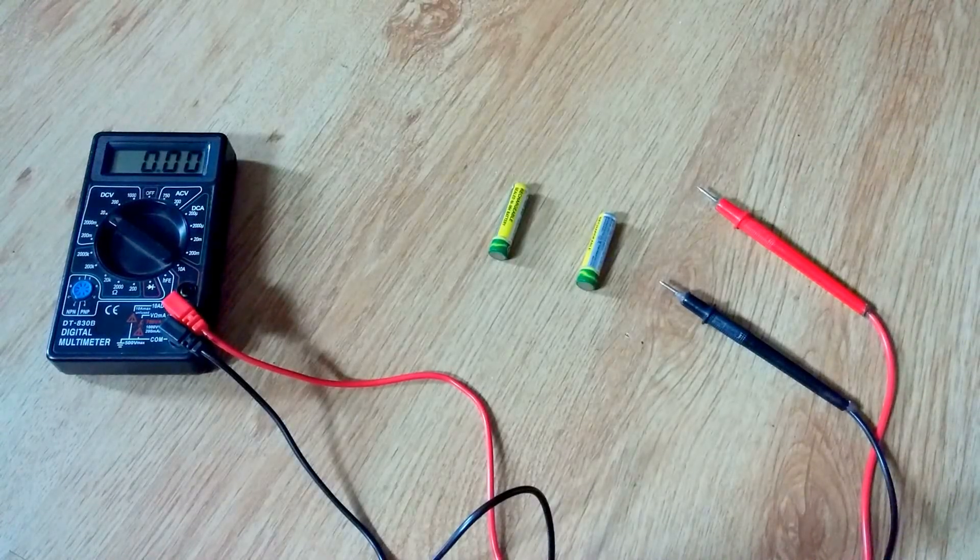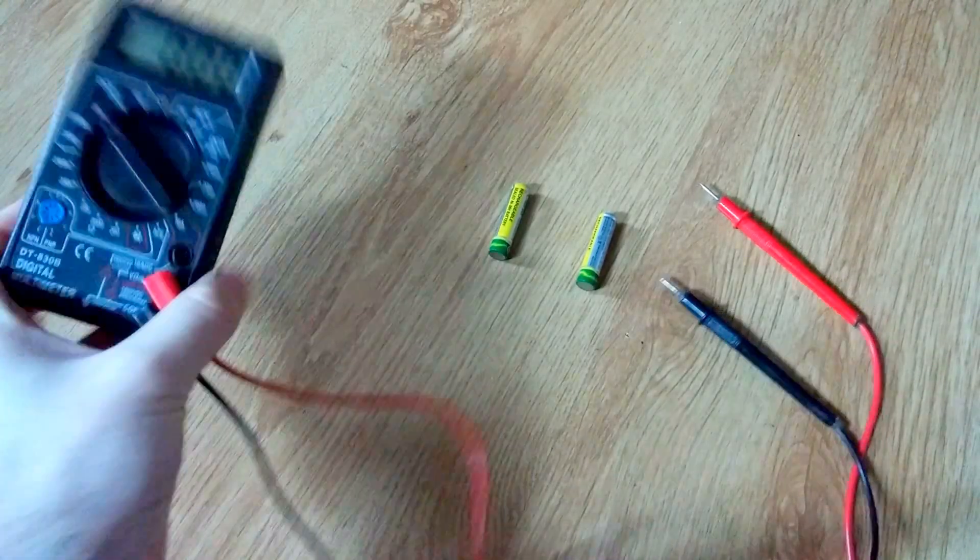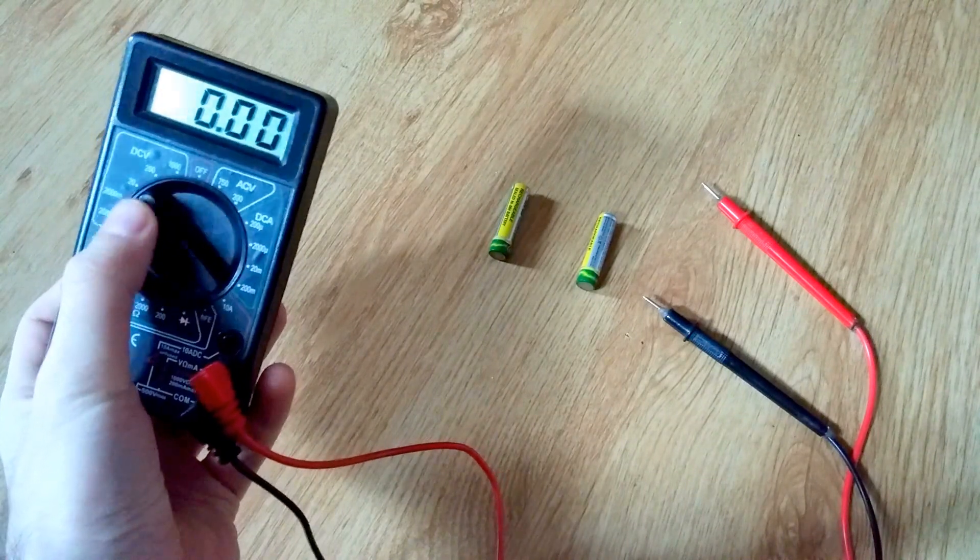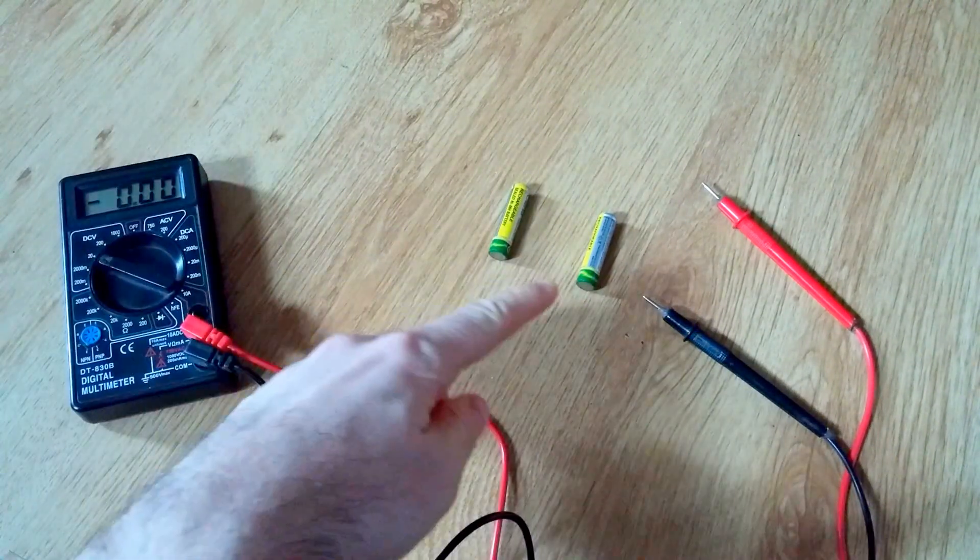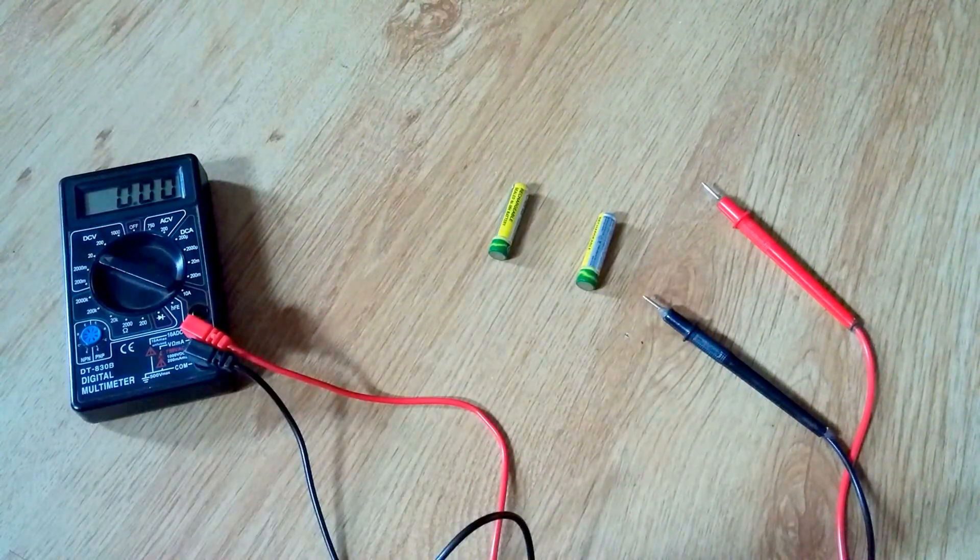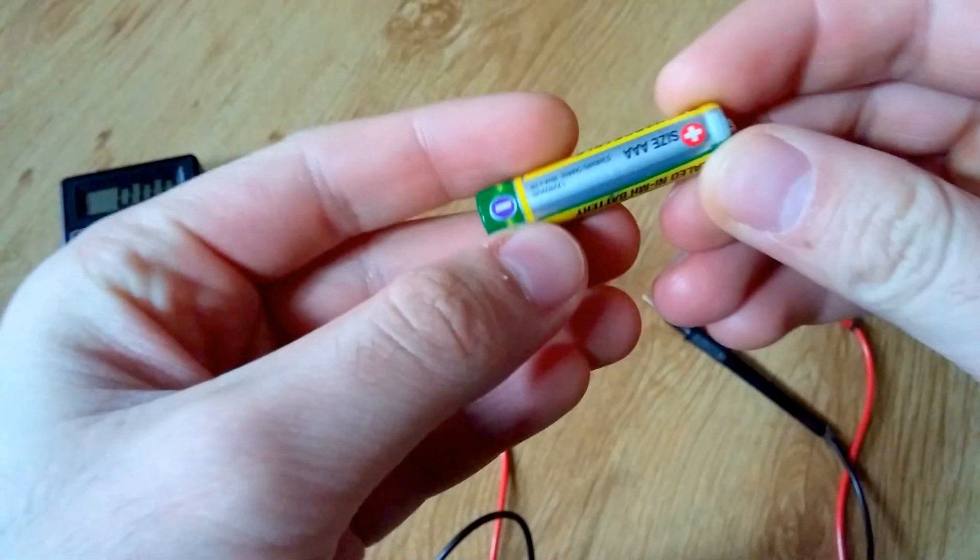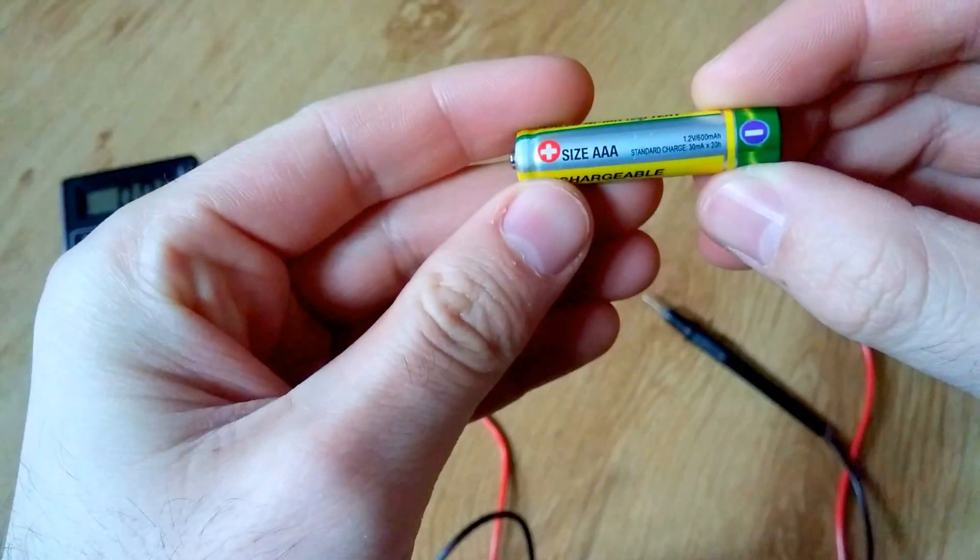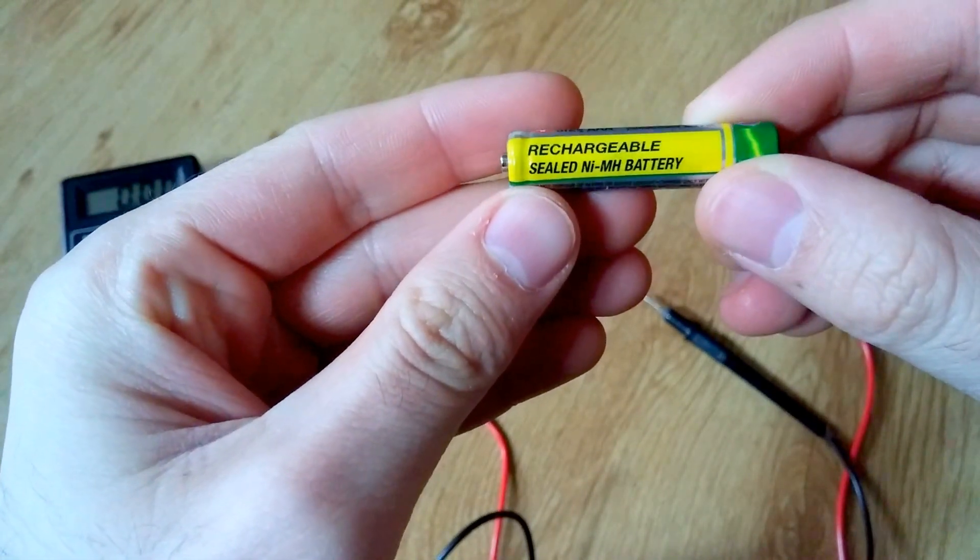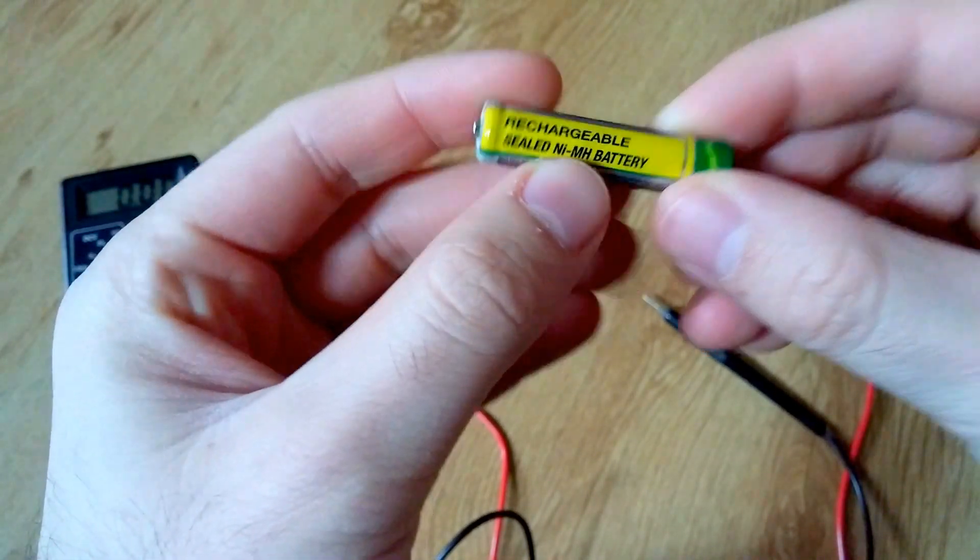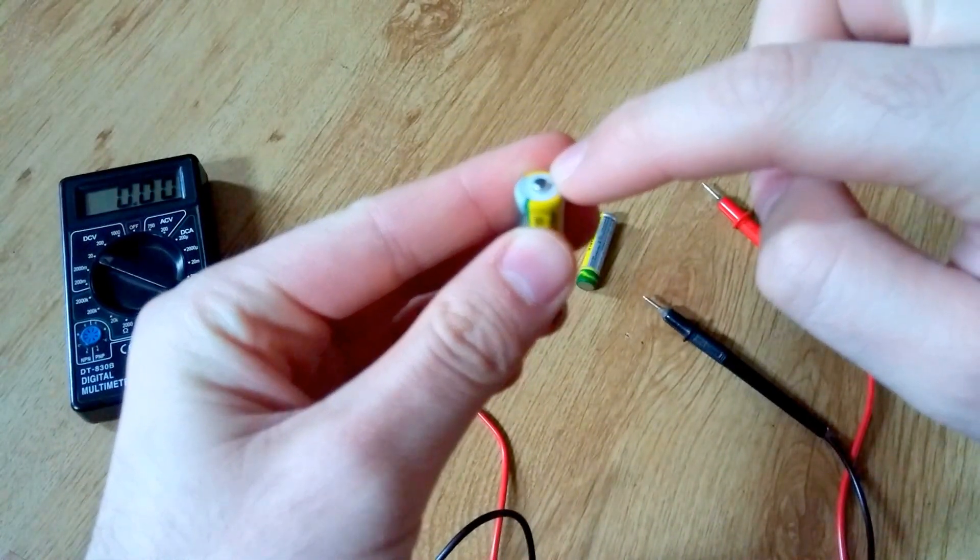Okay, here's an interesting situation. Here's a multimeter set to measure DC voltage and here are two batteries. One of them is pretty strange. It's a rechargeable battery, AAA nickel metal hydride.